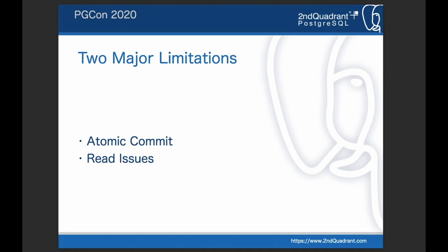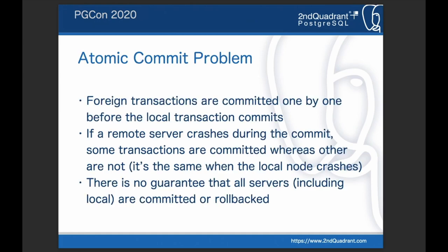These two issues are what I'd like to focus on in this presentation. So let's get into the details of the atomic commit issue first. As of now, foreign transactions are committed one by one before the local transaction commits. So there is no guarantee that all servers, including the local one, are committed or rolled back. The next slide shows this problem with a diagram.